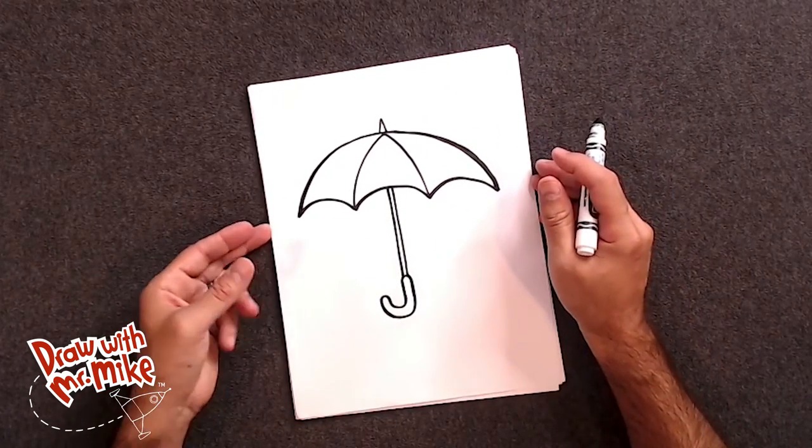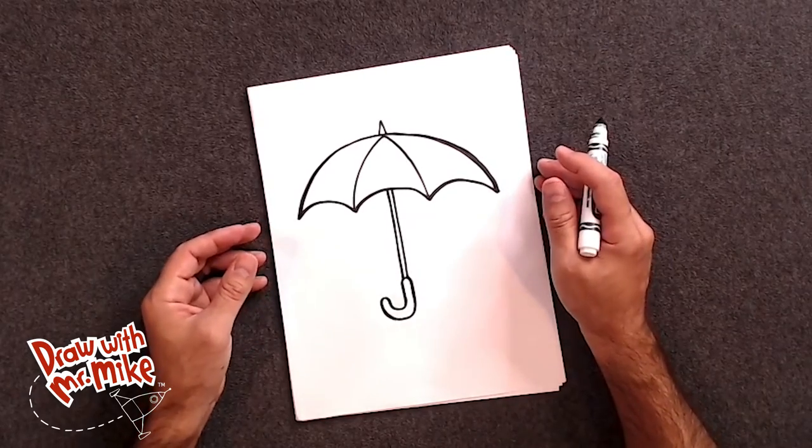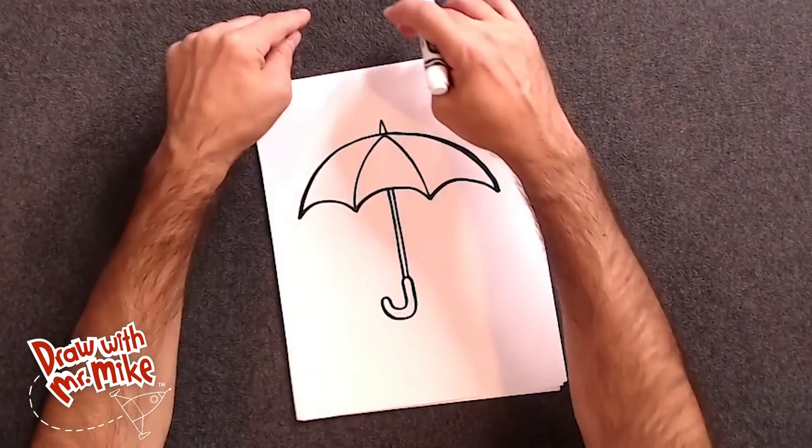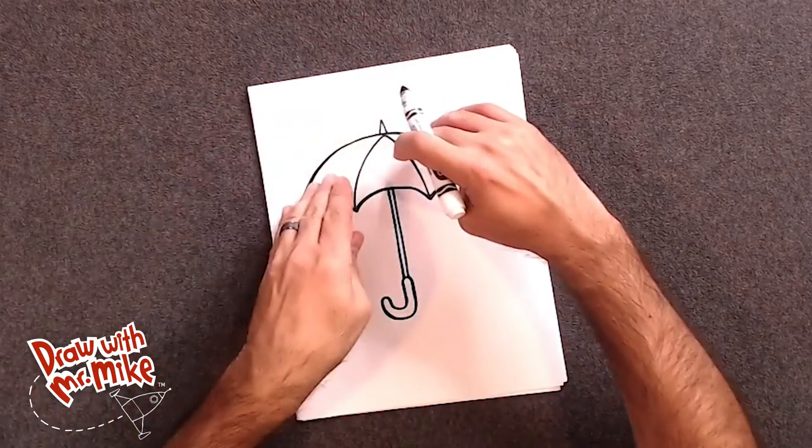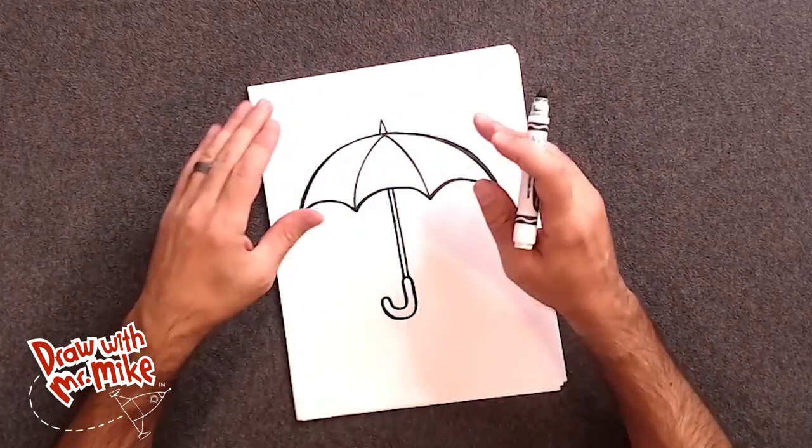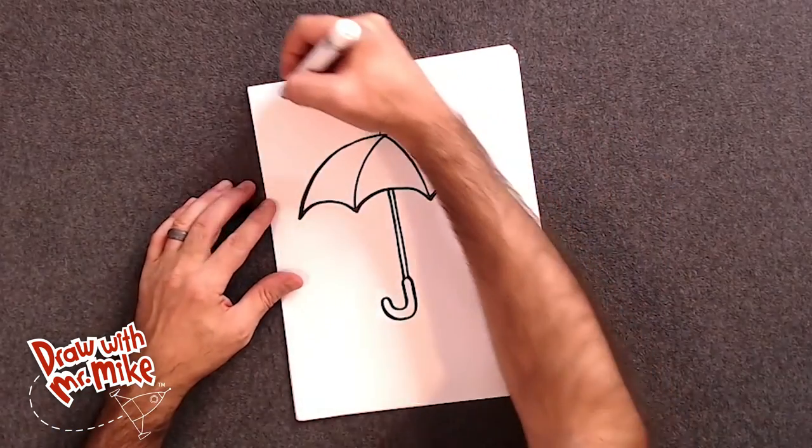The rain, we're just going to use lines. Now, you can decide if you want your rain to be coming straight down or at an angle or an angle this way. That's up to you. I'm going to make mine on an angle.